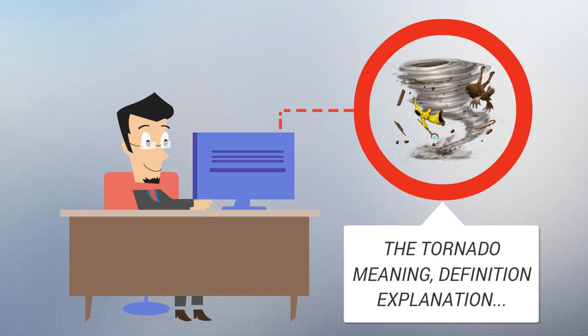The most extreme tornadoes contain wind speeds of more than 300 miles per hour (480 kilometers/h), are more than 2 miles (3 kilometers) in diameter, and stay on the ground for dozens of miles (more than 100 kilometers).